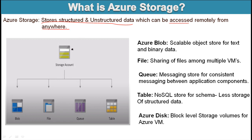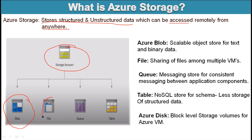Next, in this diagram, as you can see, this is the Azure storage account. We are having a total of four types of Azure storage accounts. The first is blob, the second is file, the third is queue, and the fourth is table. So these are the types of Azure storage accounts.